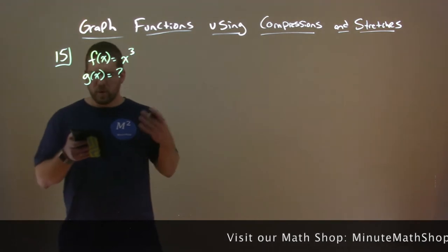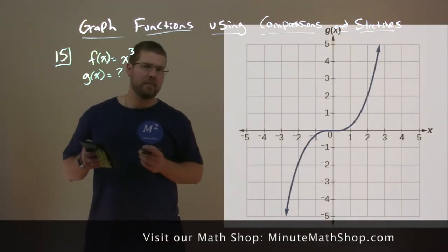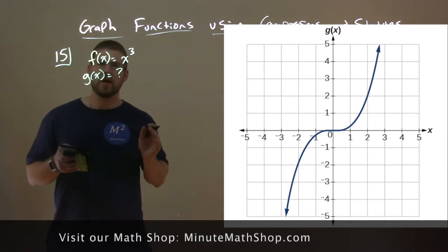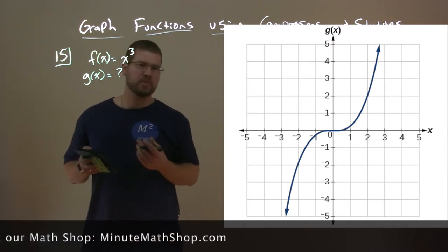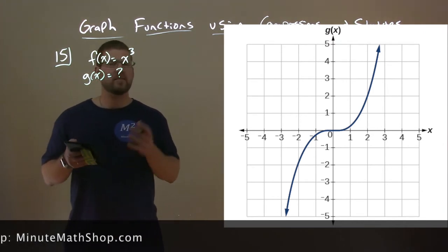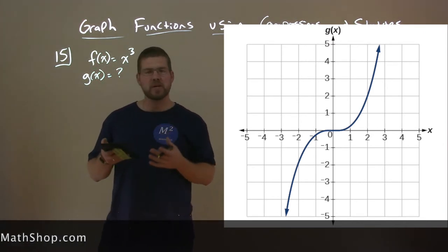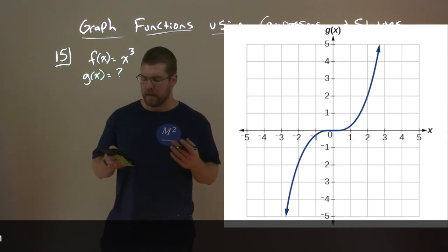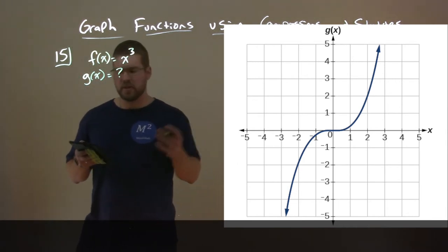So now we want to recognize a vertical stretch. We have this graph g of x, which is based off the toolkit function f of x equals x to the third power, but it's some compression or stretch of it. So how do we go about finding that? Let's find a value we can see on g of x.